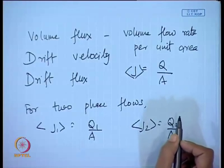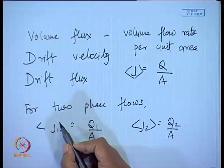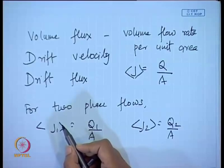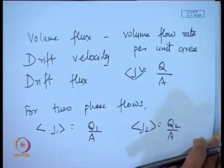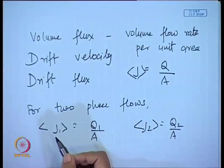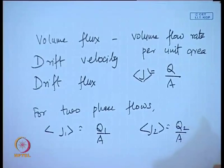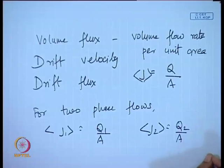All these things denote the average volumetric flux. When there is no variation across the cross section, the local flux and the average flux are the same. Under normal circumstances we are not going to put those brackets every time; it is implied that we are speaking about average fluxes. Since we will be dealing mostly with one-dimensional flow situations, our local fluxes and average fluxes are going to be the same thing. The brackets denote cross-sectional average values and usually we omit them.